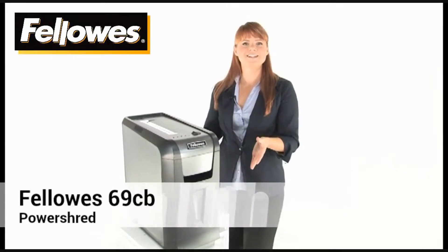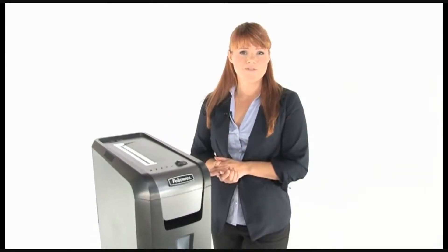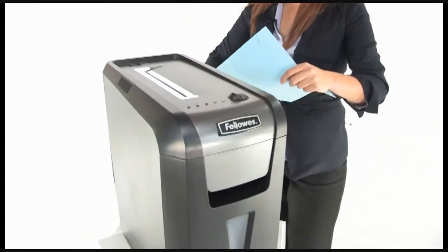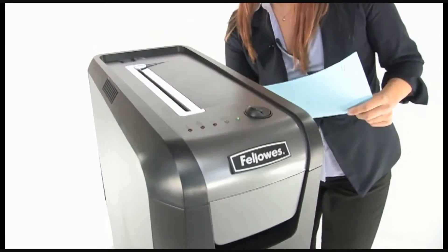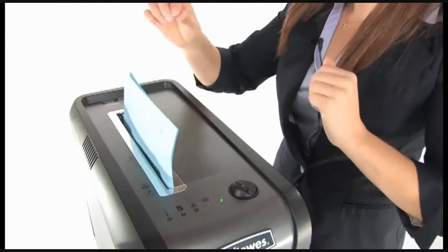This is the Fellowes 69 CB Power Shred. It's a cross cut shredder for home and small office use. Come on in and watch it work. It can shred up to 10 sheets of paper at one time, as well as credit cards, staples, and paper clips.